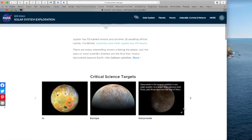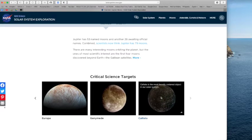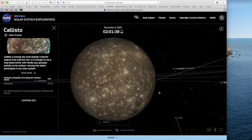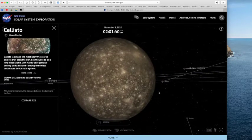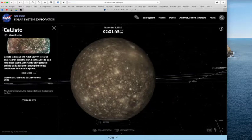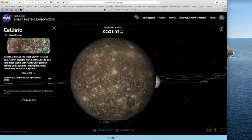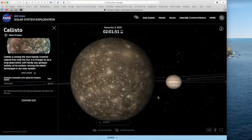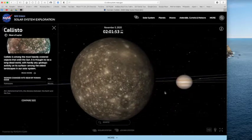And then the last Galileo moon is called Callisto. Callisto is among the most heavily cratered objects that orbits the sun. It's thought to be a long dead world with hardly any geological activity on its surface. So a lot of craters. Here you can see Callisto with Jupiter in the background.